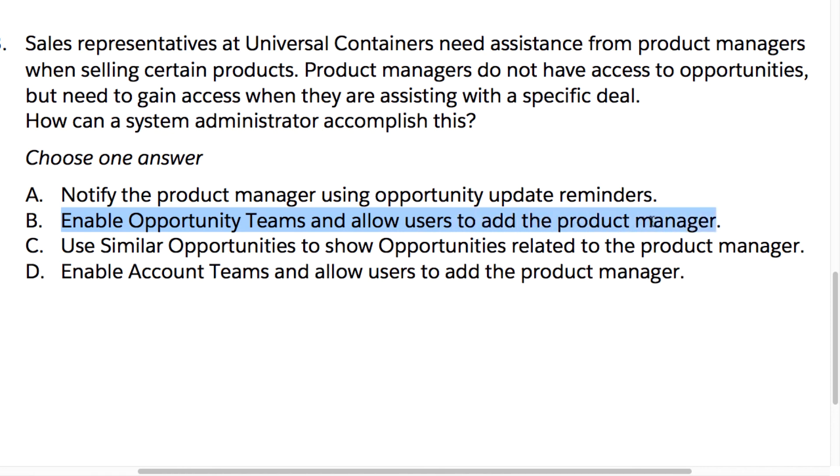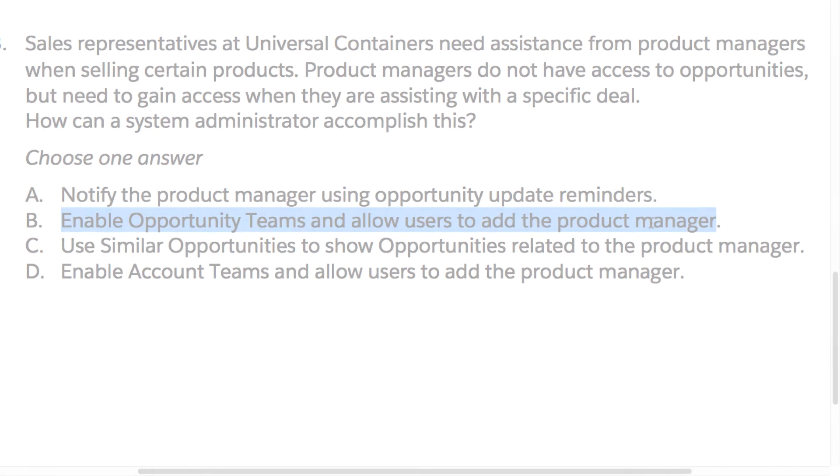So the correct answer for sample question number three from the administrator exam guide is B — enable opportunity teams and allow users to add the product manager.